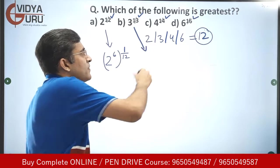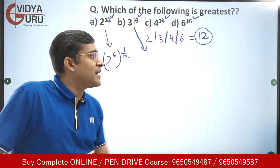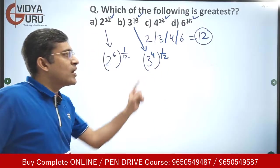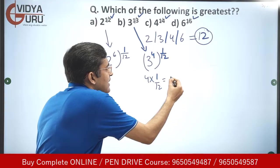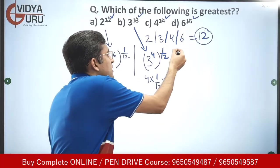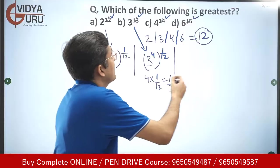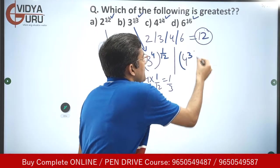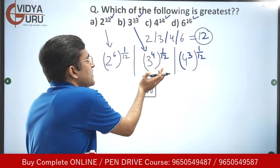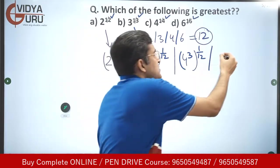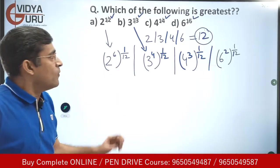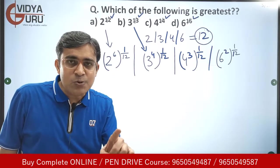The second term: 3^(1/3) = (3^4)^(1/12), because 4 × (1/12) = 1/3. The third term: 4^(1/4) = (4^3)^(1/12), because 3 × (1/12) = 1/4. The fourth term: 6^(1/6) = (6^2)^(1/12), because 2 × (1/12) = 1/6. All terms now have the same outer power of 1/12.